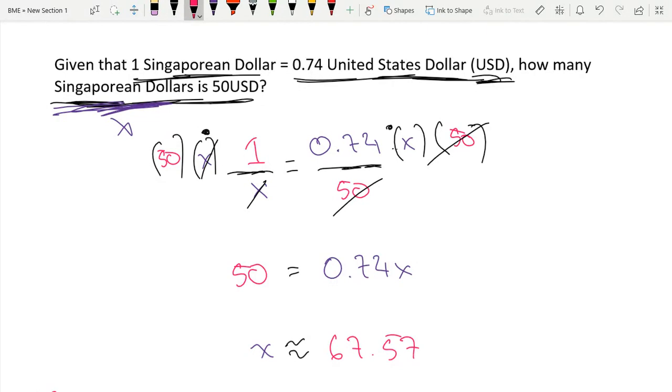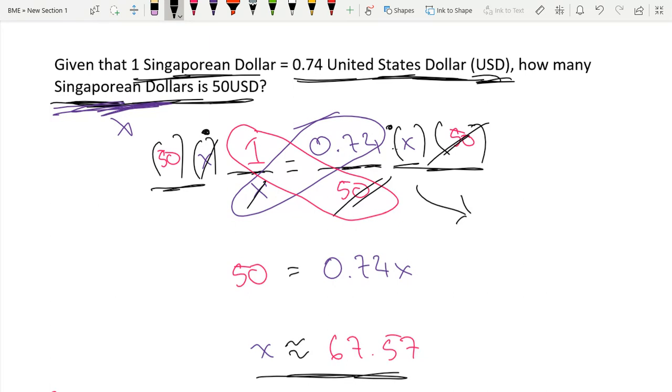Now you may have noticed that we could have just done 0.74 times x and 1 times 50, because in the process of creating common denominators we just have to multiply by both of the denominators. So like we did over here, 50 times x—our 50s cancel out but this variable x remains. And over here these two x's cancel out but the 50 remains. So we can do this technique called cross multiplying where we just multiply this part and this part to do it a lot quicker: 0.74x equals 50, and then we can just solve from there.